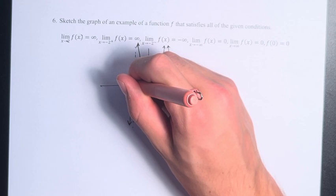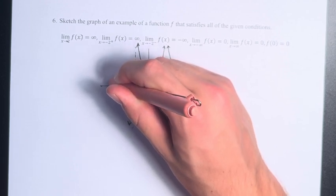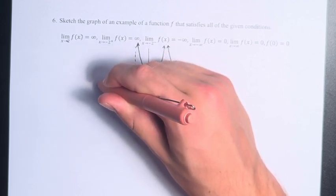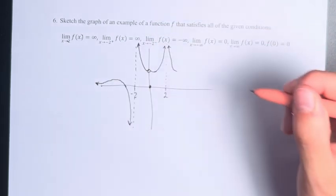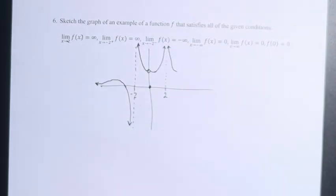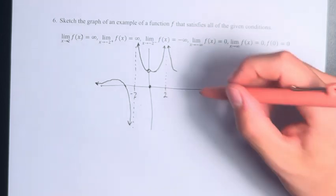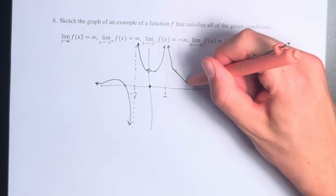So that would look something like this, where maybe we're going up, but then it gets drawn back down and it gets closer and closer without actually reaching a value of 0. And as we go in the other direction, to infinity, it also approaches a value of 0 in a similar way.